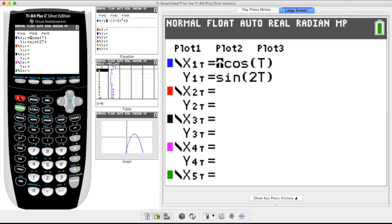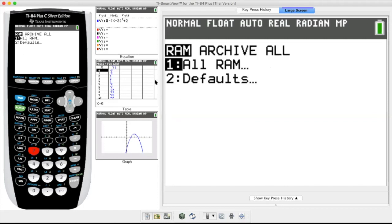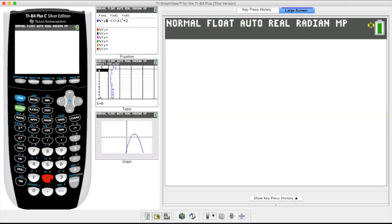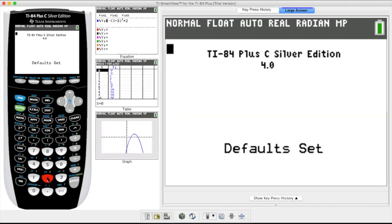So to do that, you do the following. You hit second plus, which brings you into the memory. That was second plus. I want to reset. So that's seven. And I want to go back to defaults, which is two. And then I do want to do it, which is two.